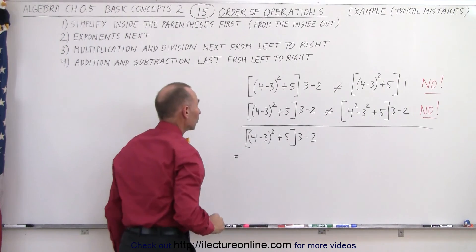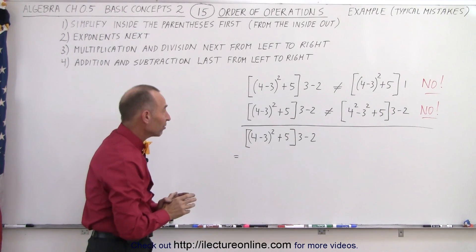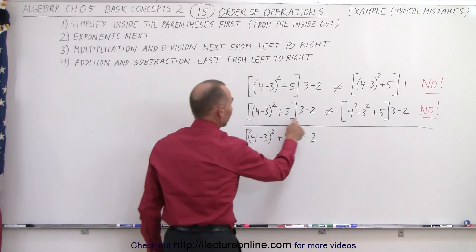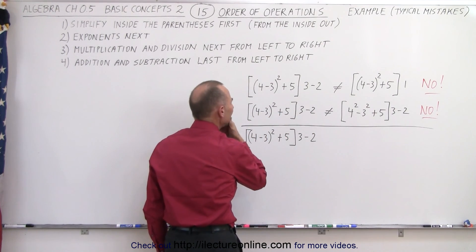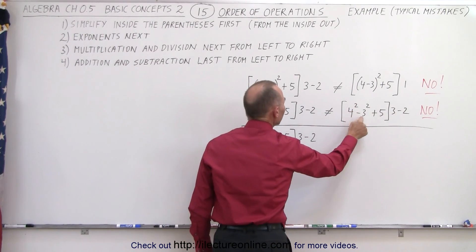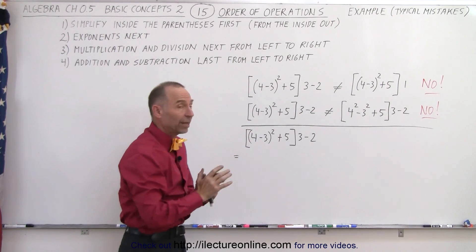Work the order of operations the way we're supposed to. Another typical error is when you see an exercise like this, the quantity (4-3)², and you might say that means 4² minus 3². That would make the bracket simpler, but that is not correct.